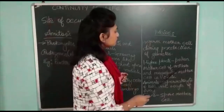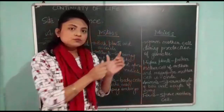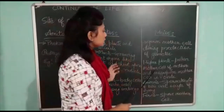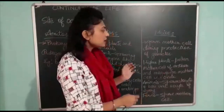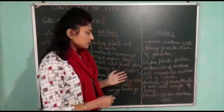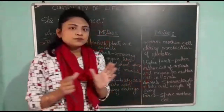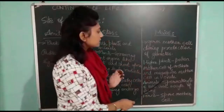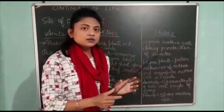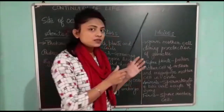In the anther, the pollen mother cell undergoes meiotic cell division to produce pollen grains. Whereas in the ovule, which is the female reproductive part of a flower, there is a megaspore mother cell present where the meiotic cell division process will occur.